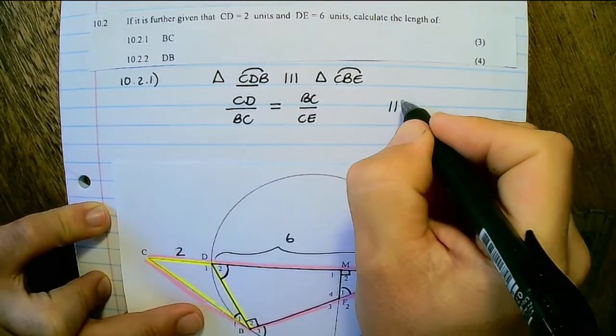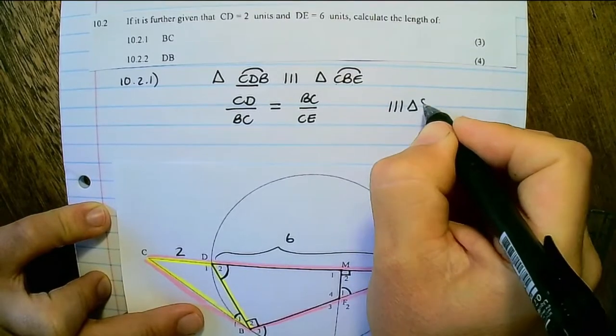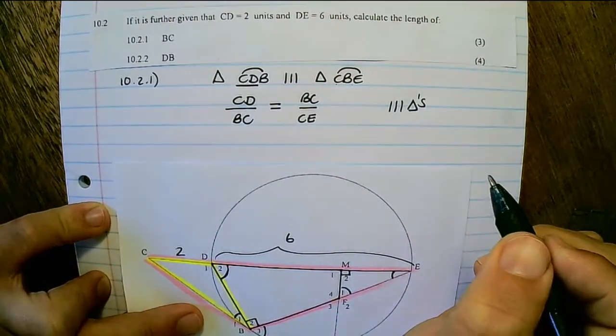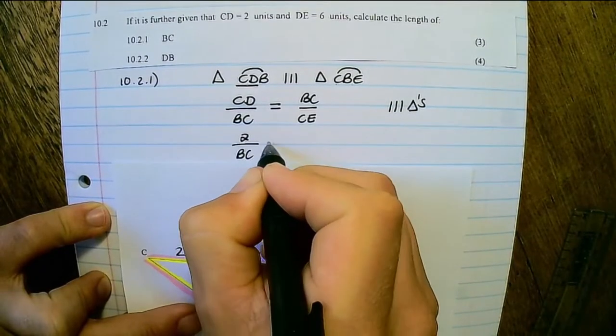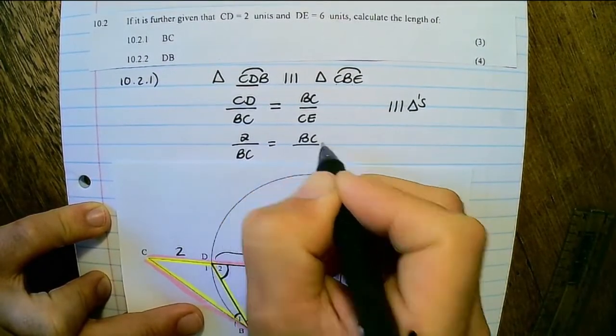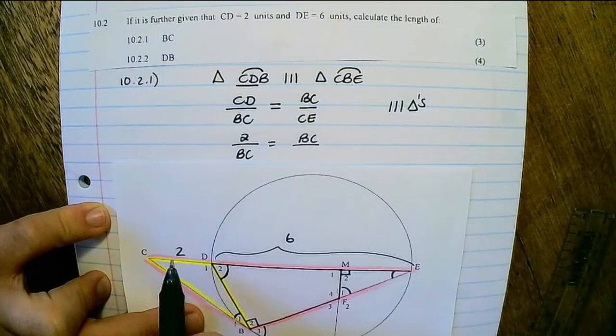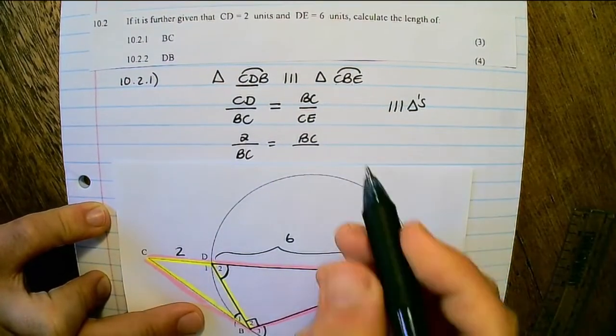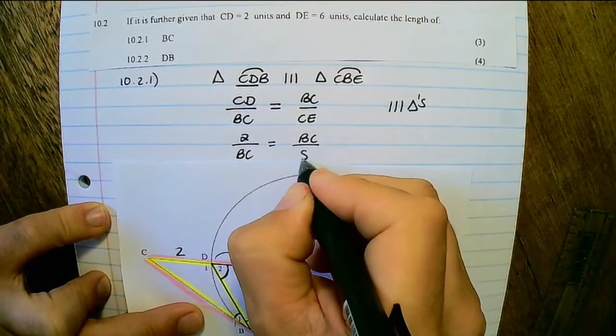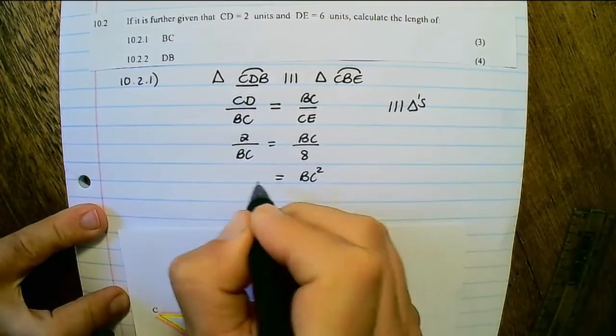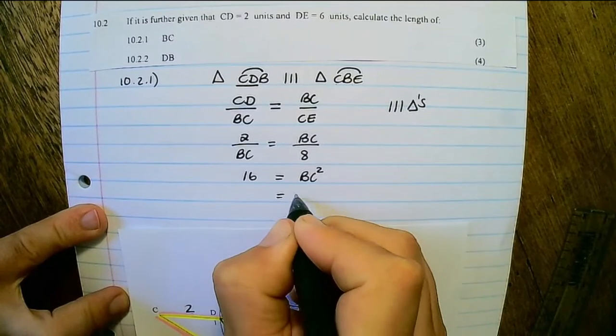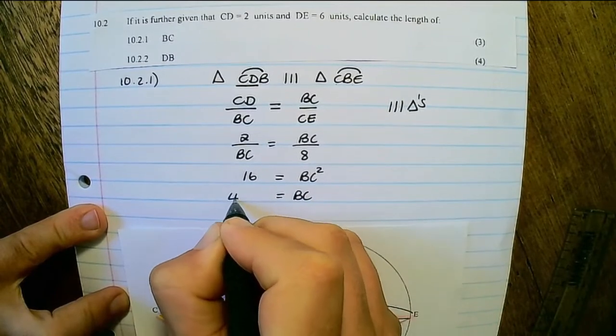The reason is similar triangles. But CD's length is 2 units and BC we want to calculate, and CE's length would be a full 8 units. Therefore, if I cross multiply, I have BC squared is equal to 16. Therefore, BC is equal to 4 units.